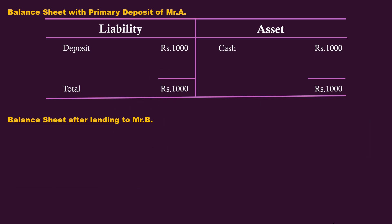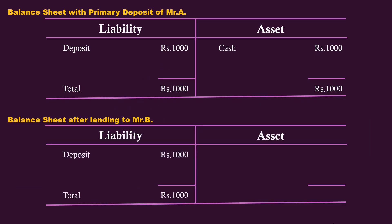After lending, the balance sheet of the bank changes. Cash becomes 200 rupees, and a new entry is made to show the credit extended to Mr. B. When the bank lends, it creates an account in the name of the borrower and deposits the loan amount in that account. The bank creates a deposit in the name of Mr. B. Since this deposit is created from lending, it is called a derived deposit.